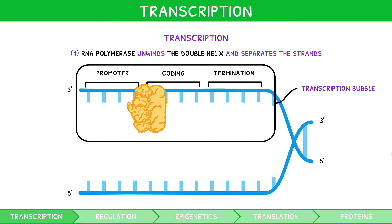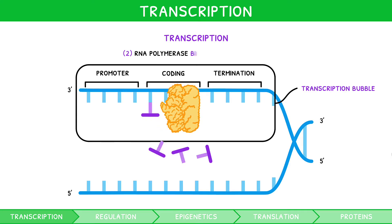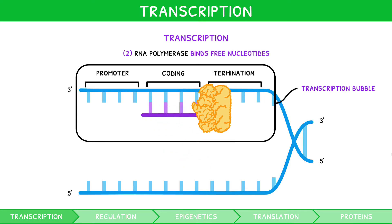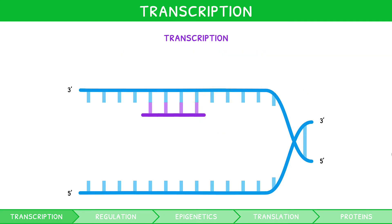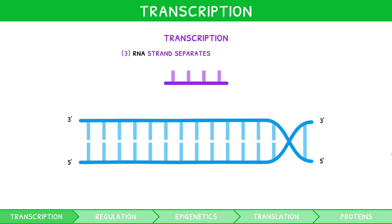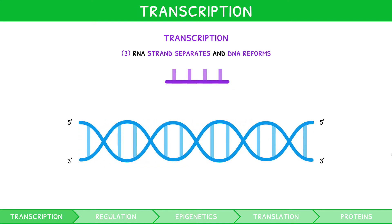At the coding region, RNA polymerase binds free nucleotide triphosphates to the antisense strand via complementary base pairing, in a 5' to 3' direction. This generates an RNA strand with uracil in place of thymine when forming the complementary base pair to adenine. At the terminator region, RNA polymerase stops adding bases. The RNA strand separates from the DNA, and the DNA reforms its double helix.